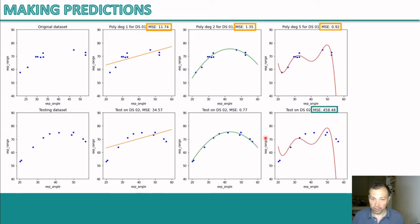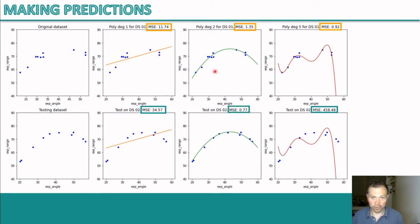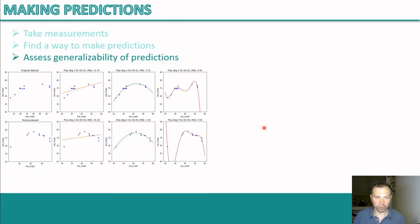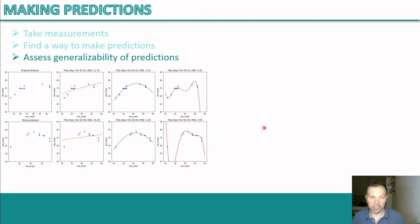For new data, the polynomial of degree 5 has a massive error — it didn't generalize well at all. The linear fit error is worse but relatively reasonable, and the parabola has almost the same error, even a bit lower, probably due to noise. It's very important to assess the generalizability of your predictions. A key question is also how variable is your model: if you get a new dataset and fit again, is your model going to change a lot or stay constant? This is a fundamental concept in machine learning called the bias-variance trade-off.